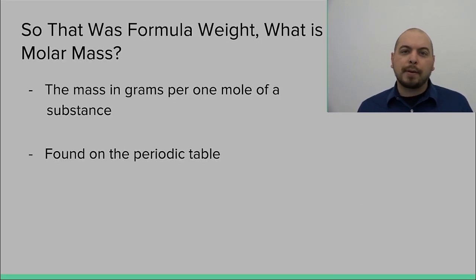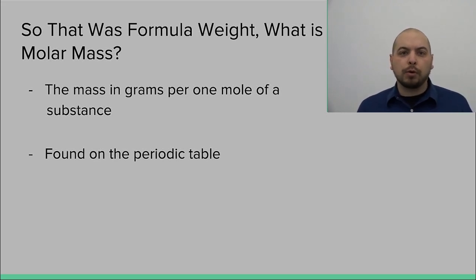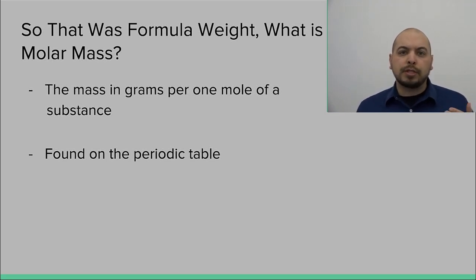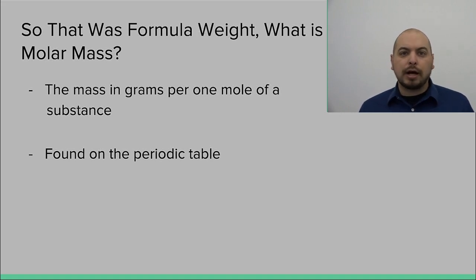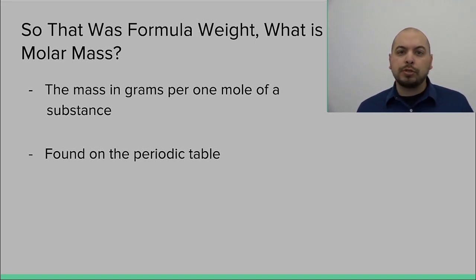So that was formula weight. Now let's talk about molar mass. If the formula weight is the weight of a single atom, molecule, or formula unit, the molar mass is going to represent the mass of one mole of atoms, molecules, or formula units. The most helpful component of this is the fact that numerically it doesn't change — the only thing that changes is the units. For example, we said that carbon has an atomic mass of 12.011 amu, which means carbon has a molar mass of 12.011 grams per mole. So just like we calculated the formula weight, we're going to use the same numbers to calculate molar mass, we just change the units.